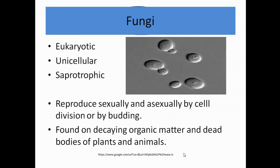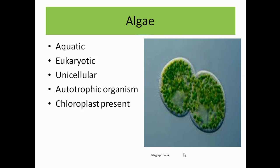Next is fungi. Fungi are eukaryotic, unicellular, saprotrophic organisms that reproduce sexually and asexually by cell division or by budding. They are found on decaying organic matter and dead bodies of plants and animals. Examples include baker's yeast, Candida, and mushroom.